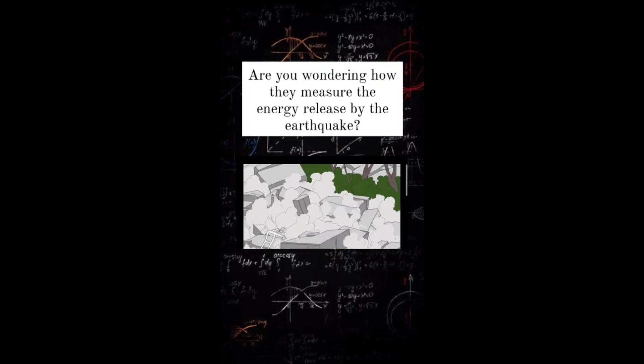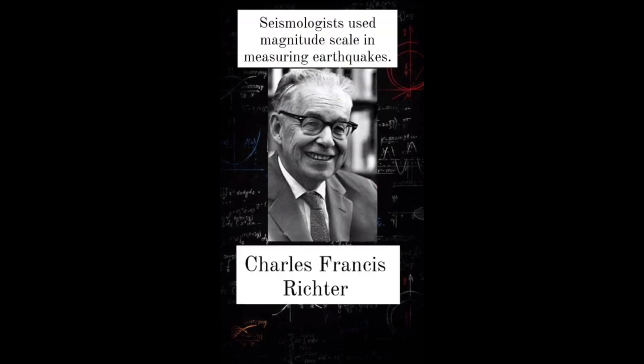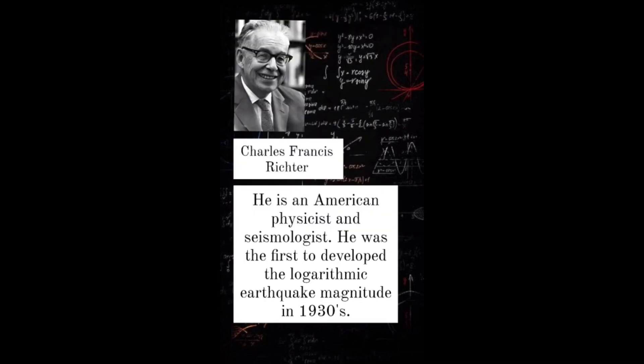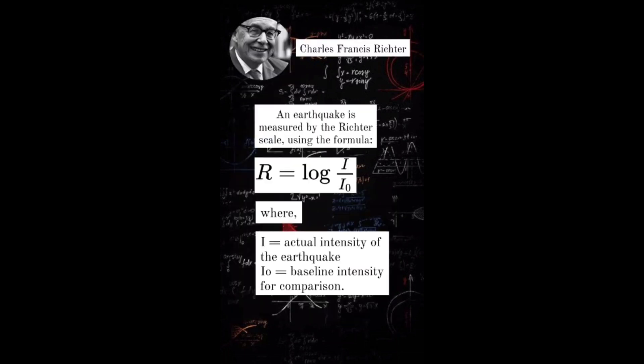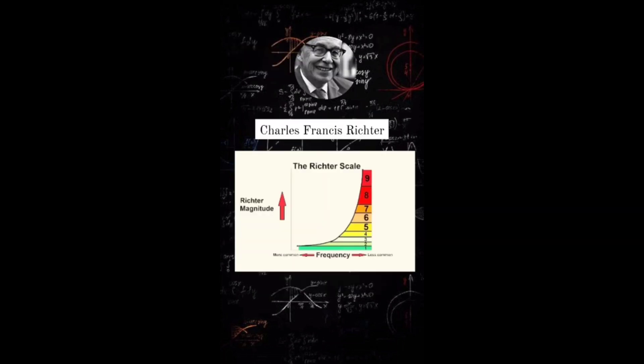Are you wondering how they measure the energy released by an earthquake? Seismologists use a magnitude scale, and the mind behind this invention is Charles Francis Richter, an American physicist and seismologist. He was the first to develop the logarithmic earthquake magnitude scale in the 1930s. An earthquake is measured by the Richter scale using the formula R = log(I / I₀), where I is the actual intensity of the earthquake and I₀ is a baseline intensity for comparison. Here is an illustration of the Richter scale.